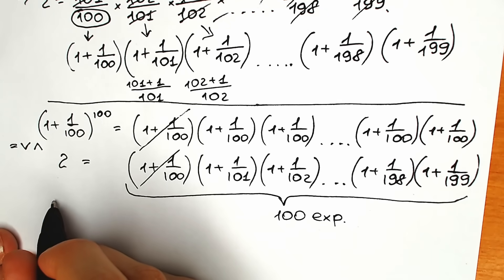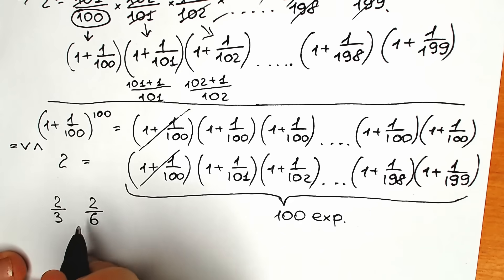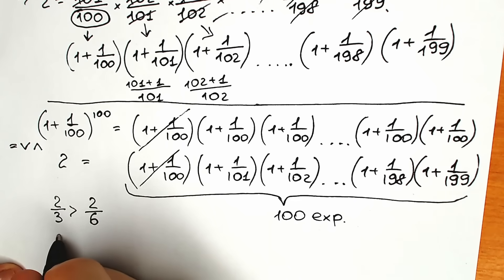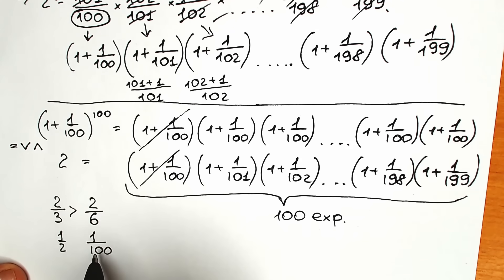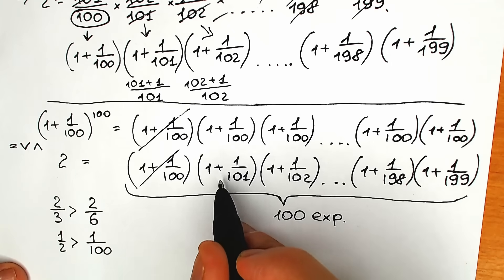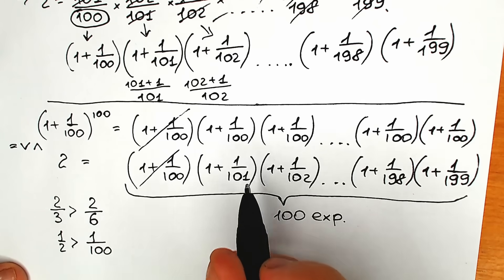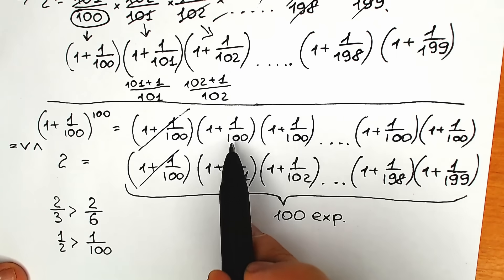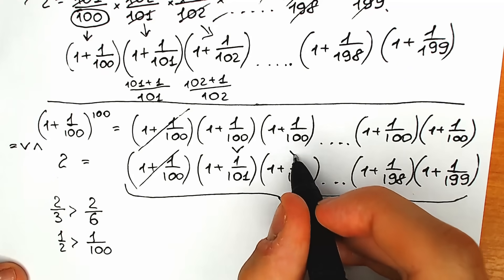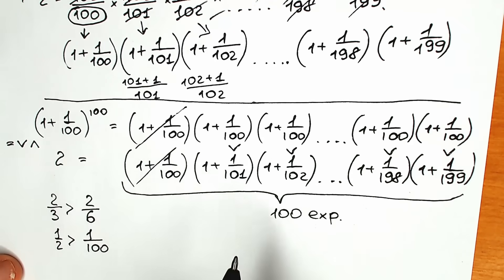A bigger denominator means a smaller fraction. For example, 2/3 is bigger than 2/6, because we divide by a smaller number. Similarly, 1/2 is greater than 1/100. So 1/100 in the top expression is greater than 1/101 in the bottom, meaning each parenthesis on top is greater than the corresponding one on the bottom. Therefore the top product is greater than 2.